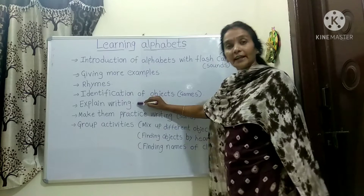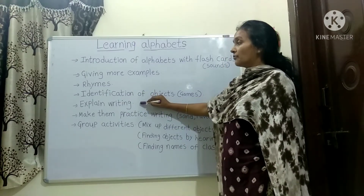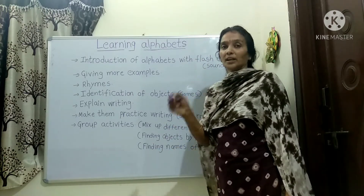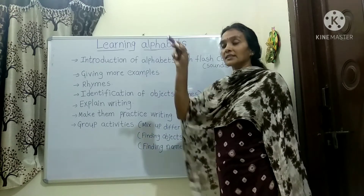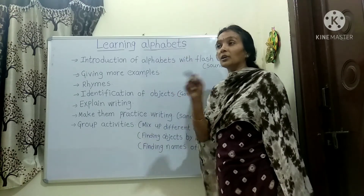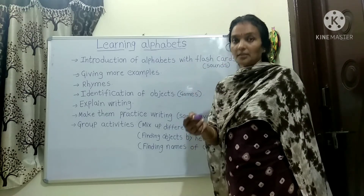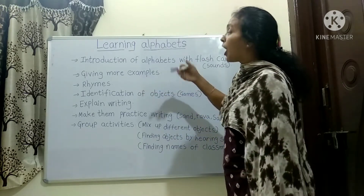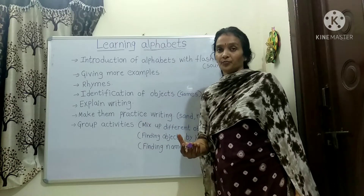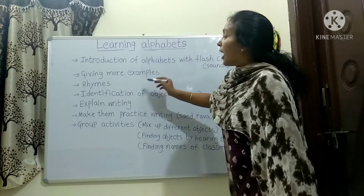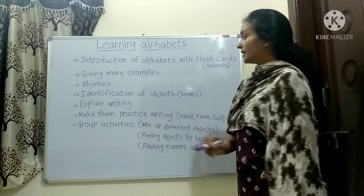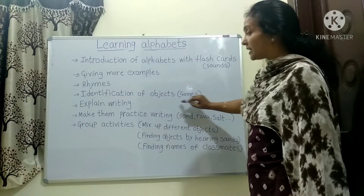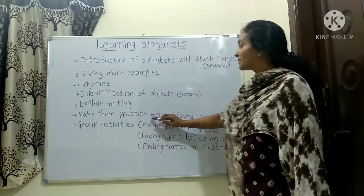Then what we do is, we explain writing — how to write the alphabet. Explaining writing means there are different ways to write, like slanting line, standing line, sleeping line, and curve lines also. There are kinds of lines. Through that, we explain how to write the letter properly. After that, we make them practice writing — we explain writing, then ask the child to practice.